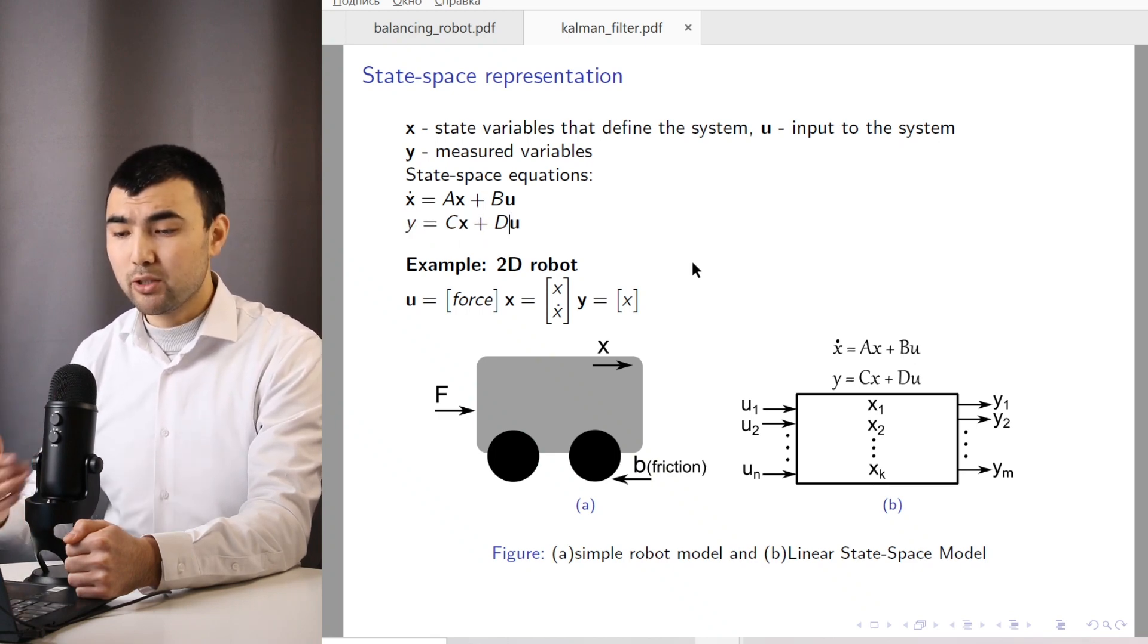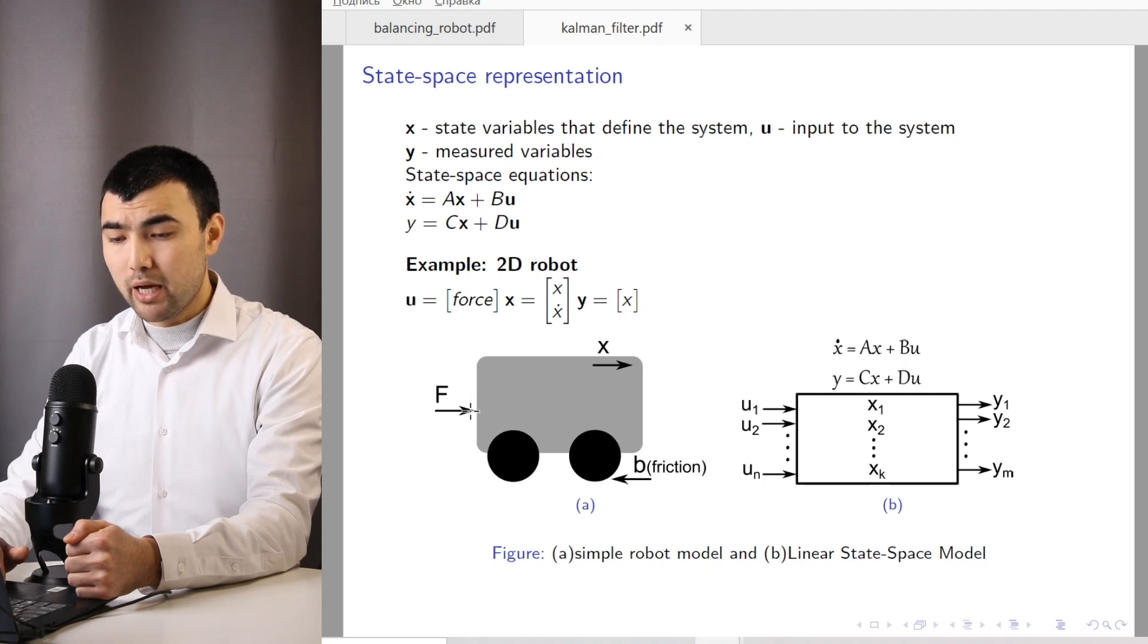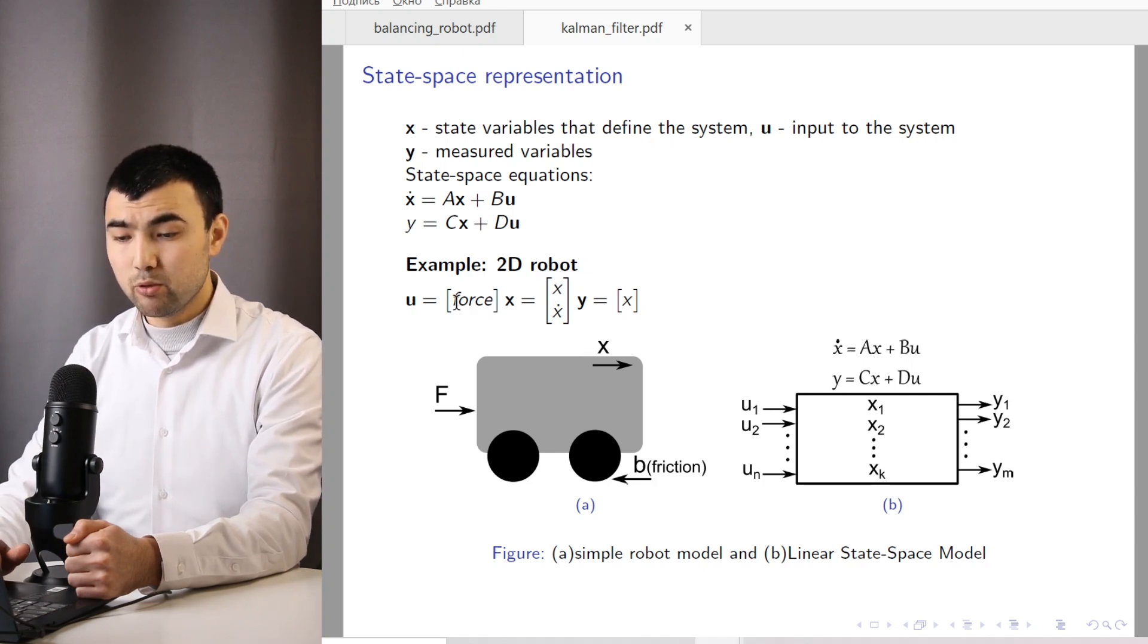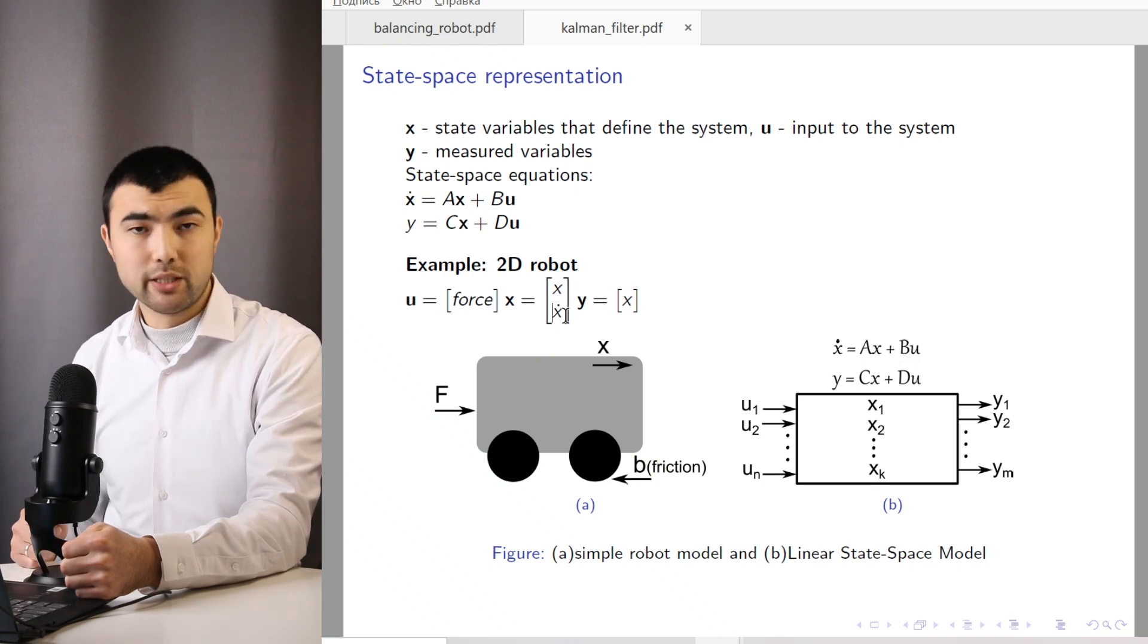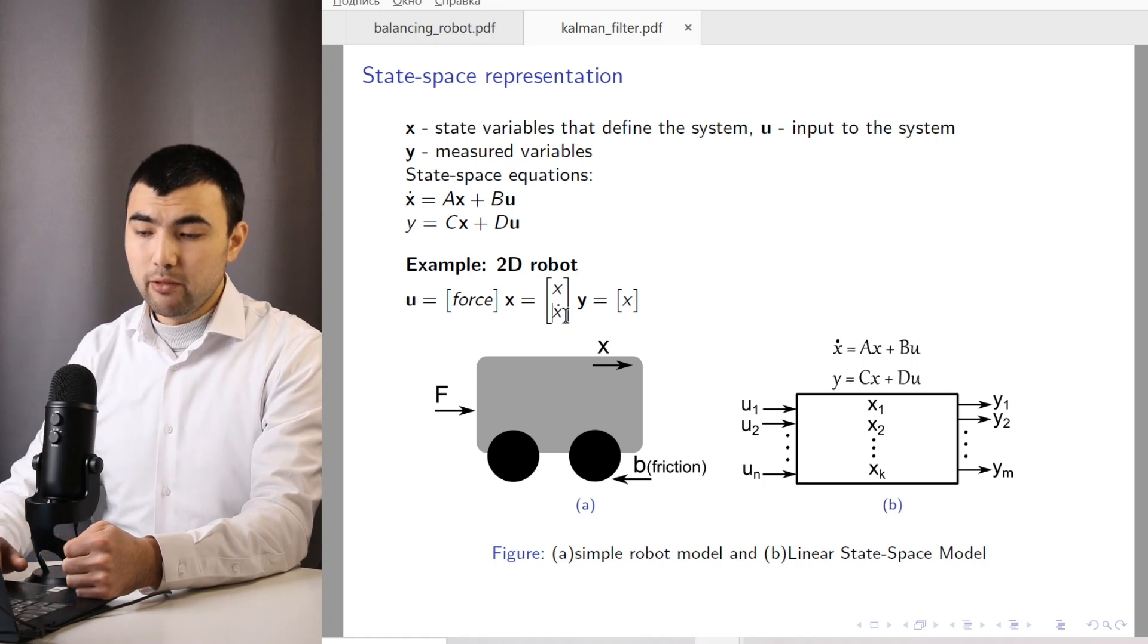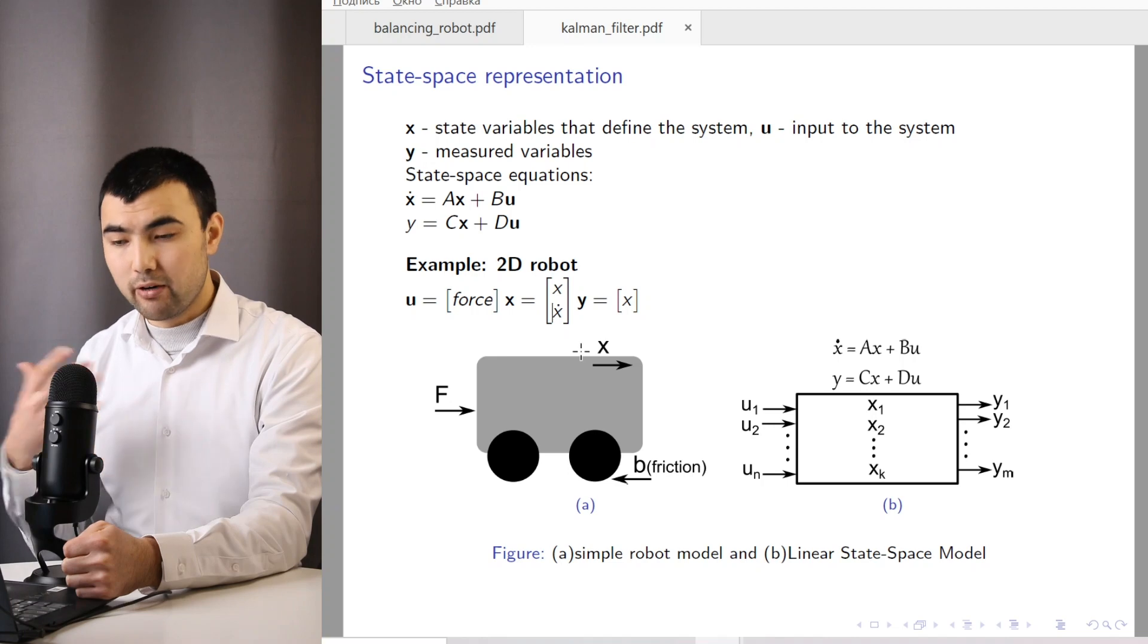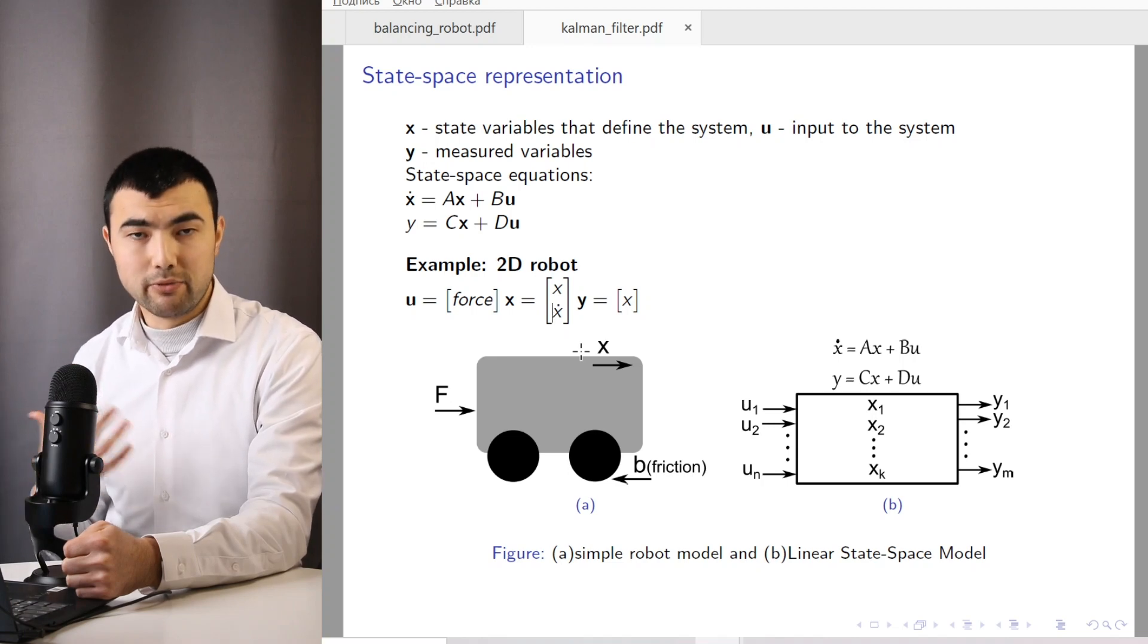So let me provide you with an example. So here we have this simple vehicle, we apply the force, and it starts moving. So the input to this system would be just a force, just one variable, and as state variables, we have the position and X dot, which is the velocity of the vehicle. Because if we know the position and the velocity, we can fully define the dynamics of the vehicle.